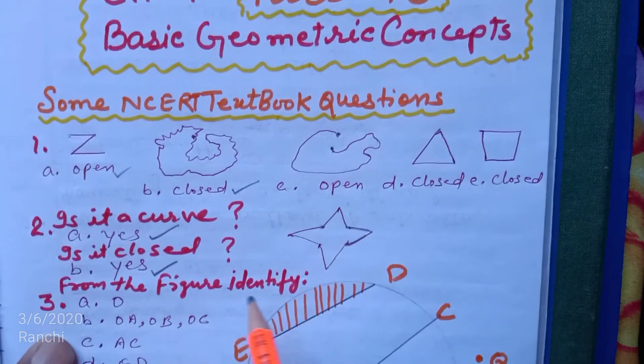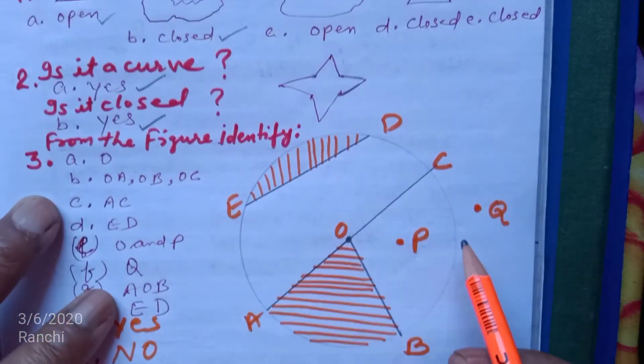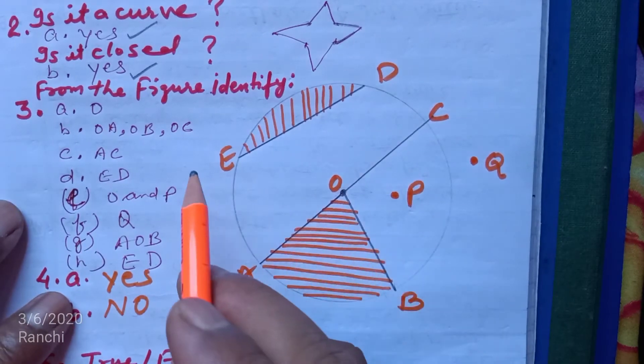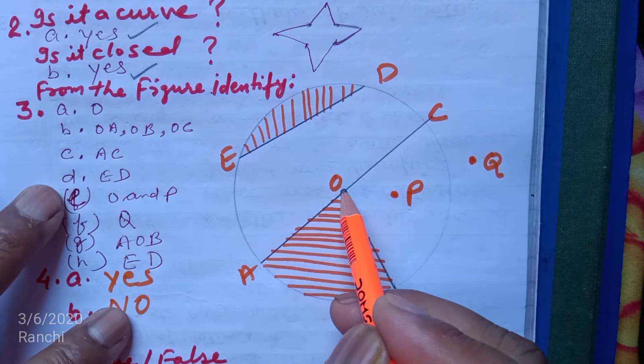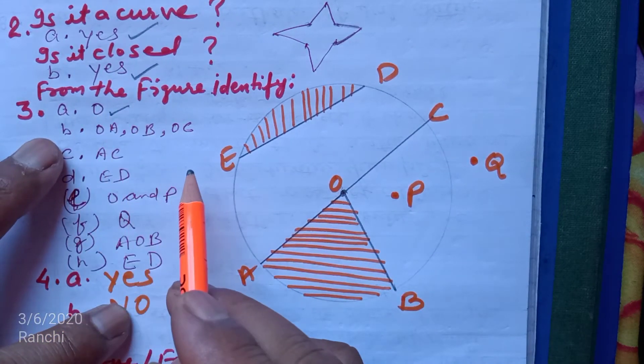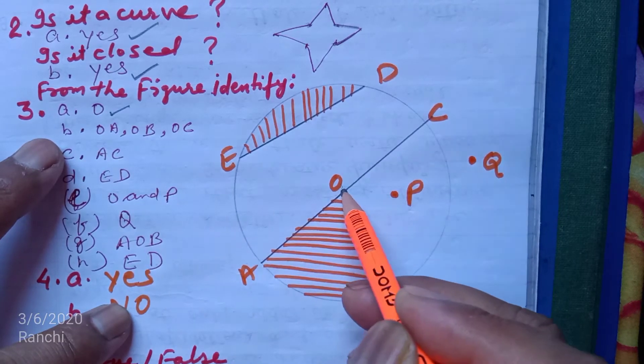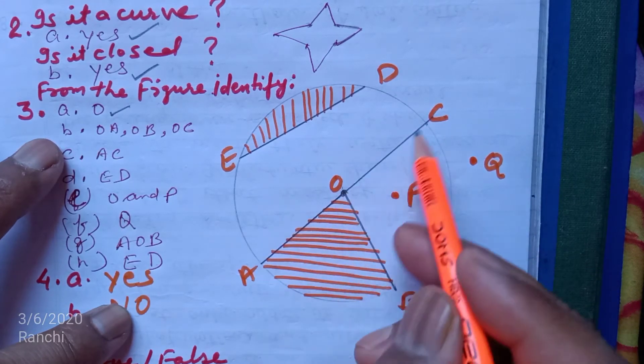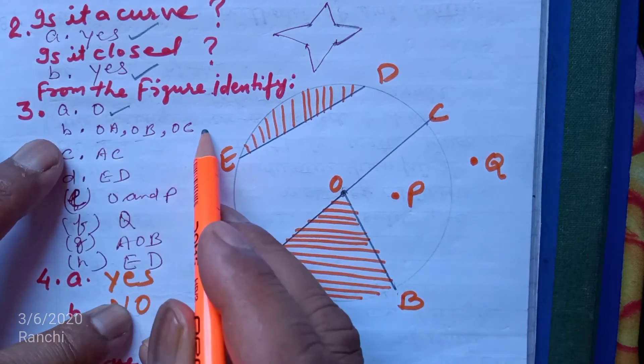This is a simple curve. Identify this figure. Number A: center of the circle, this is O, answer is O. Number B: three radii, center to circle line segments. OA, OB, OC are three radii.